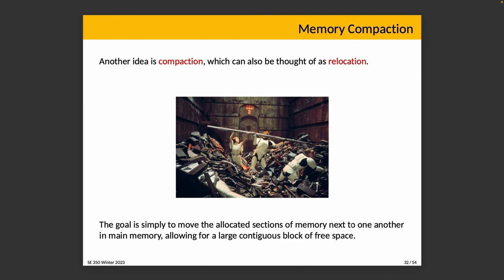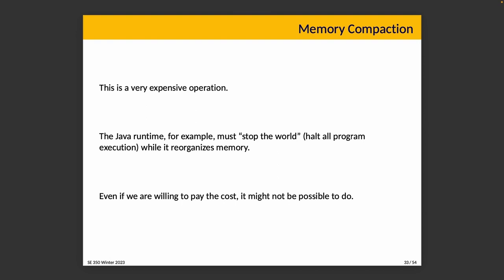Another idea is compaction — essentially relocation — where if a request for n bytes comes in and we don't have space, maybe we can make space by moving things around. The goal is to move allocated sections next to one another, allowing for a larger contiguous free block. Java does allow this because it has references rather than raw pointers, so it knows what is a reference and what is not.